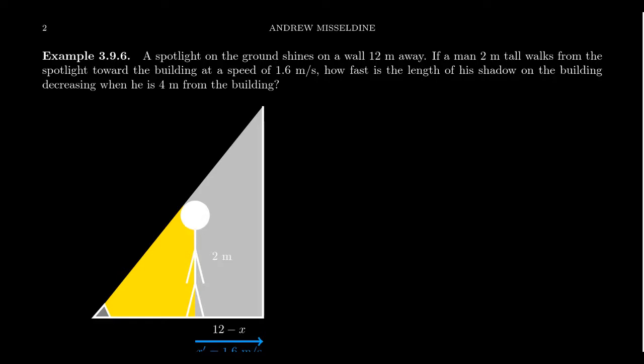A spotlight on the ground shines on a wall 12 meters away. If a man 2 meters tall walks from the spotlight towards the building at a rate of 1.6 meters per second, how fast is the length of his shadow on the building decreasing when he is 4 meters from the building?